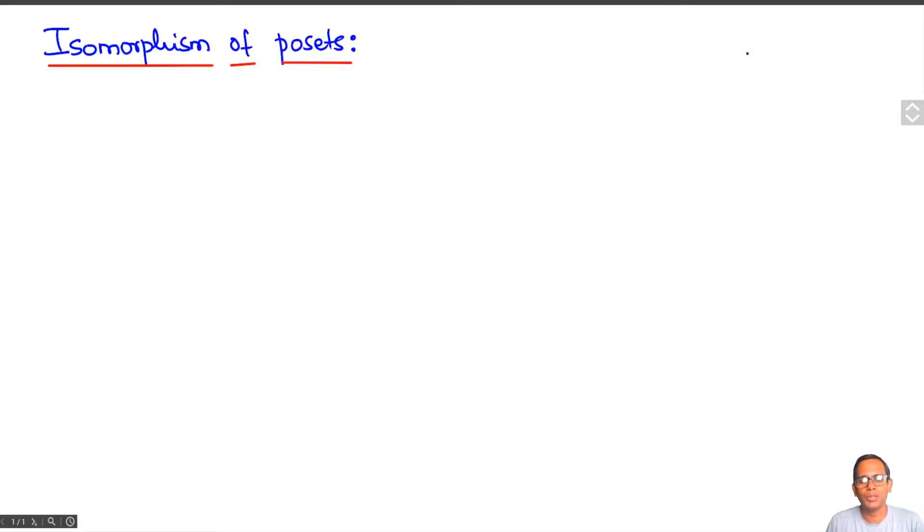The notion of isomorphism of posets tells us when we can regard two partially ordered sets as being essentially the same.